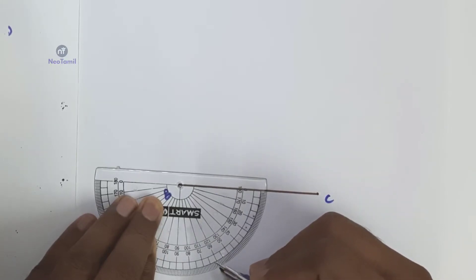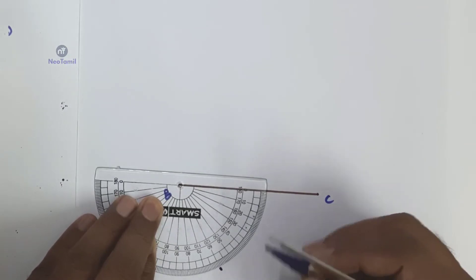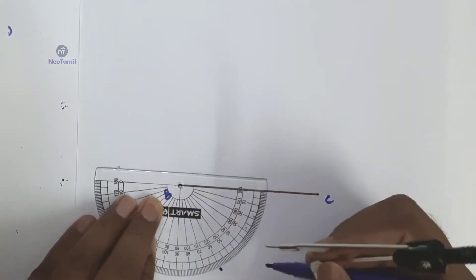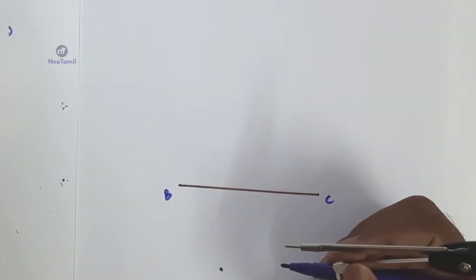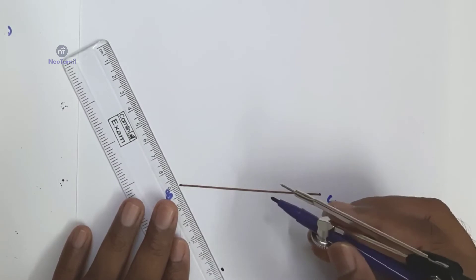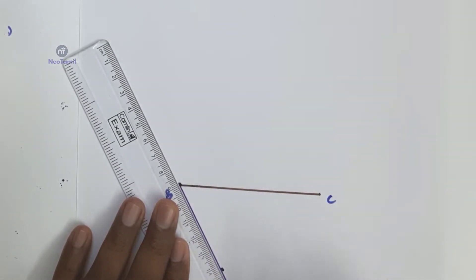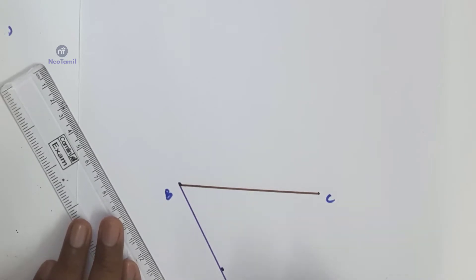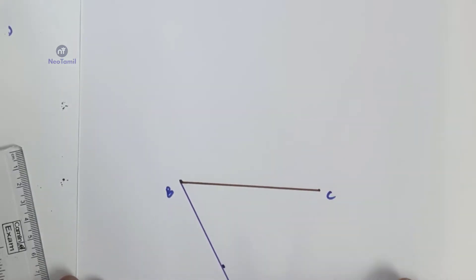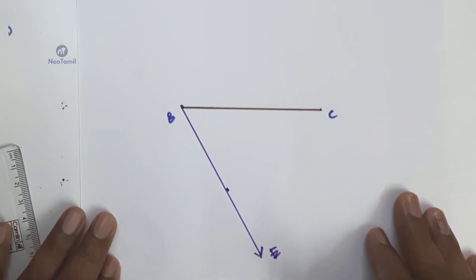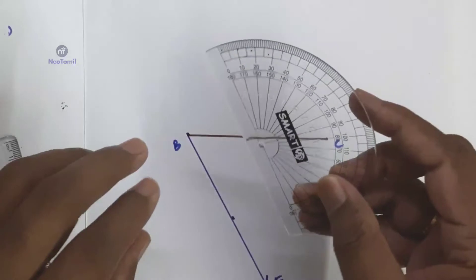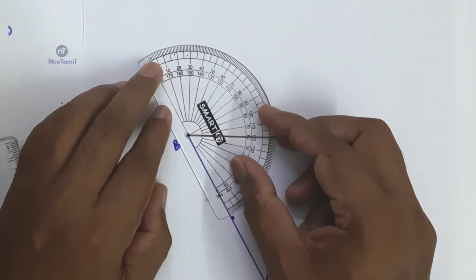We have the vertical angle below the base line. That is the first step — 60 degree angle CBE is drawn. Here is a ray drawn as BE. Again, use the protractor at B.